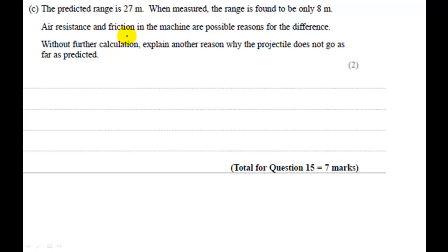So this is telling us that the predicted range is 27 meters, but it only goes 8 meters. Why is what it wants to know. Why would this be? If you read the question carefully, it already tells us. Basically, it says don't talk about air resistance, because we know it's too obvious, and don't talk about friction in the machine, because again, it's too obvious. So what you've got to do is come up with some other reasons, and it says without calculation, to explain why the projectile does not go as far as predicted.